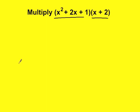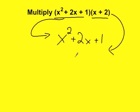What we're going to do is set this up vertically. To do that, we're going to write the top polynomial, the first polynomial, x squared plus 2x plus 1. And then I'm going to write the next polynomial right under it, x plus 2.